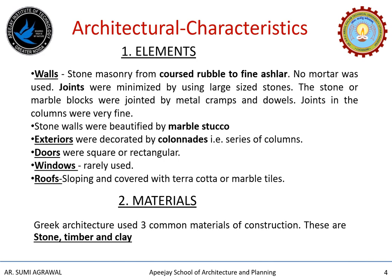Now let us discuss the architectural characteristics of the ancient Greek period. The most important elements seen in buildings are the walls, made up of stone masonry ranging from coarse rubble to fine ashlar. Mortar is not used here; the joints are very fine and minimized. The stone or marble blocks were joined by metal clamps and dowels. The stone walls have very beautiful marble stucco work, and the exteriors of buildings were decorated by colonnades, which is one of the important features.